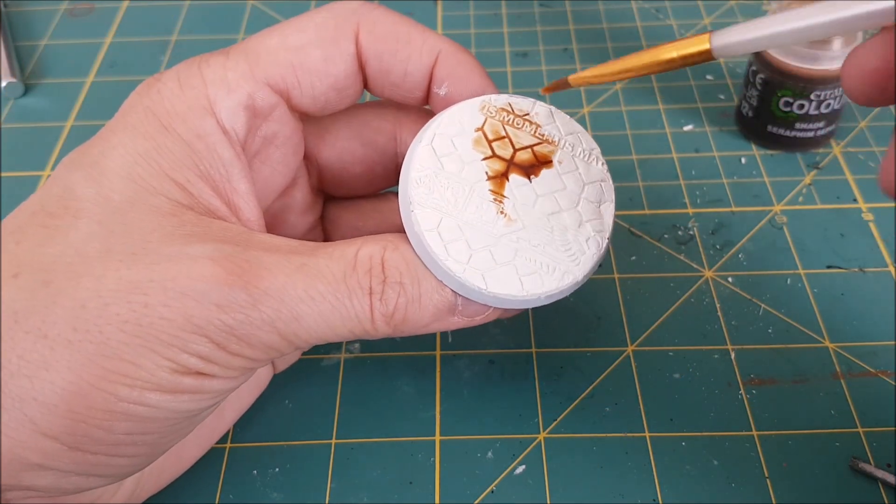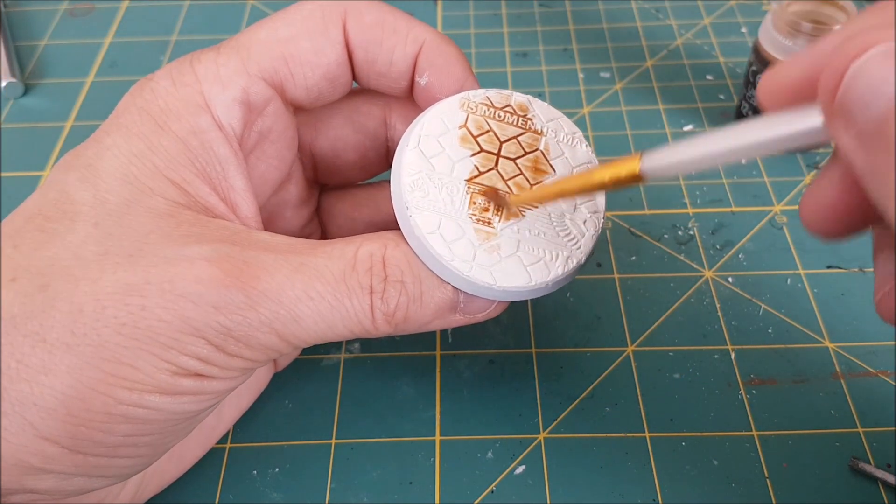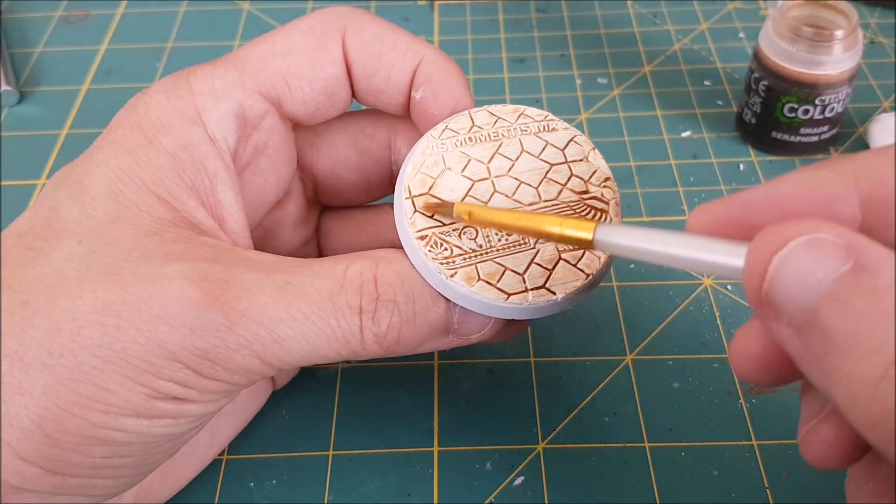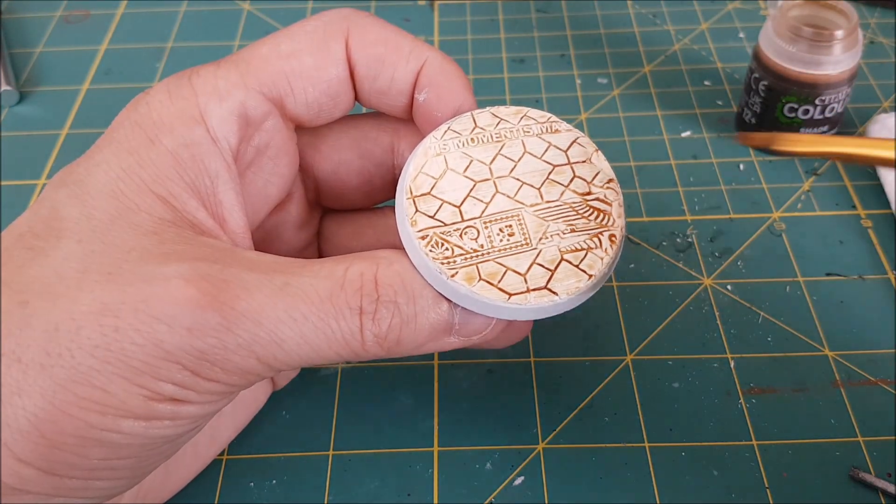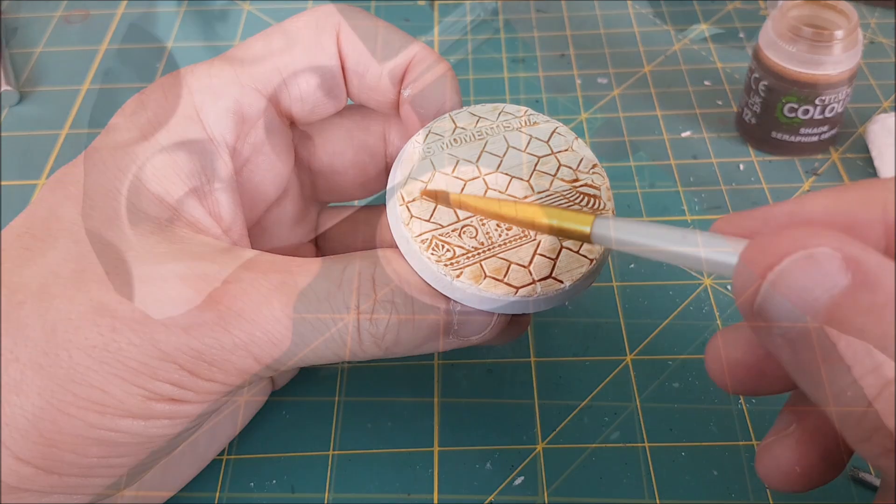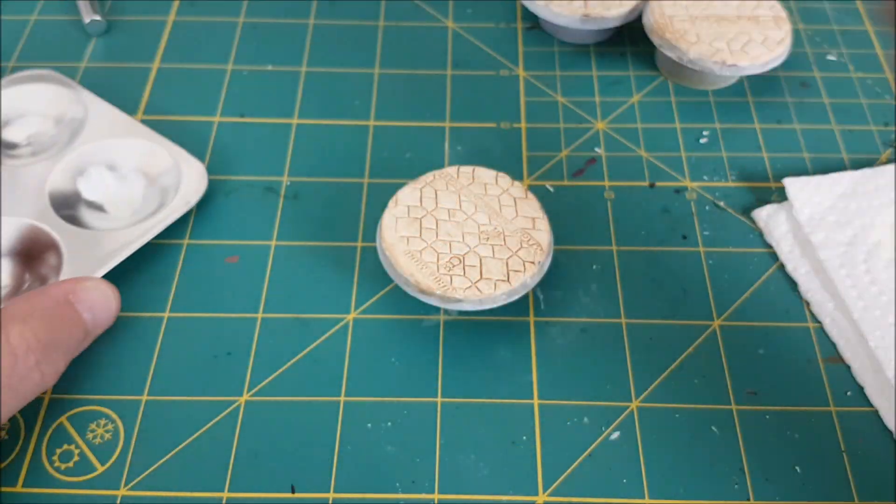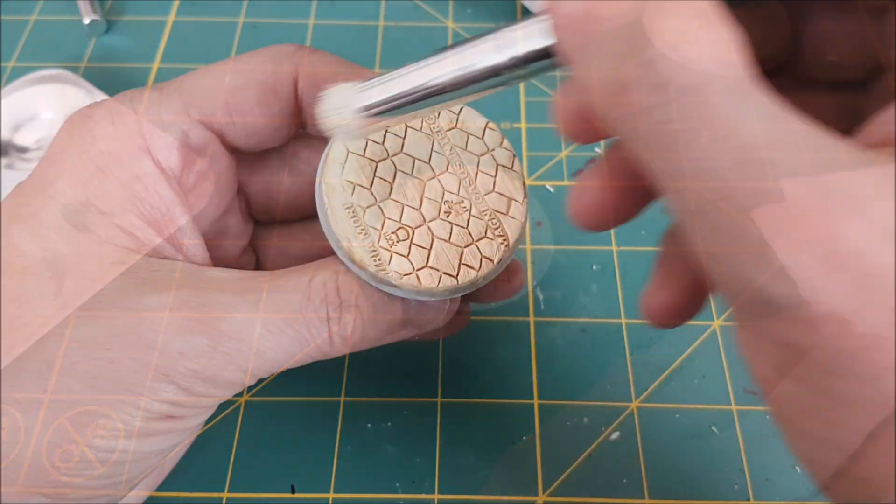Once that was completely dry, I added a layer of sepia wash and I used a damp brush to swipe away all of the pooling on the top of the stones. Then once that dried, I went back over everything with a dry brush of the original ivory color.